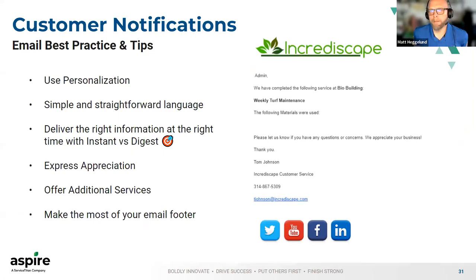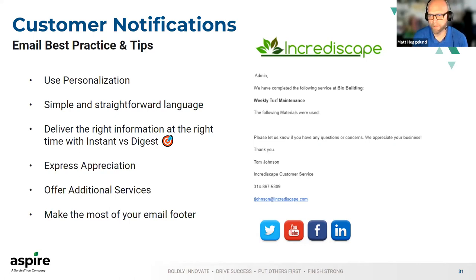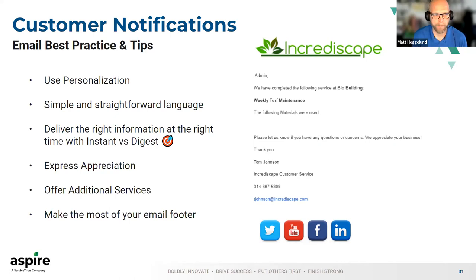As we finish up here on customer notifications, some email best practices and tips: use the tokens — you can personalize the email design and feel using those tokens. Try to use simple, straightforward language. Avoid technical industry-specific jargon that the layperson may not relate to or understand — make sure it's in their language. Deliver the right information at the right time with instant versus digest. Commercial versus residential are very different use cases: property managers on the commercial side managing multiple properties don't want 30 or 40 notifications — they want one roll-up digest containing all of that information.